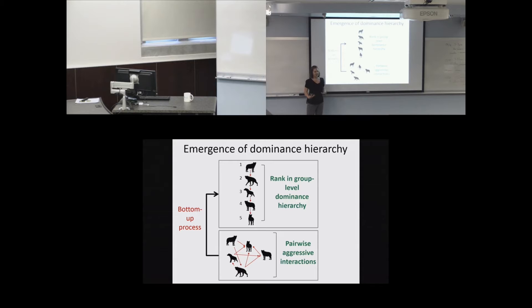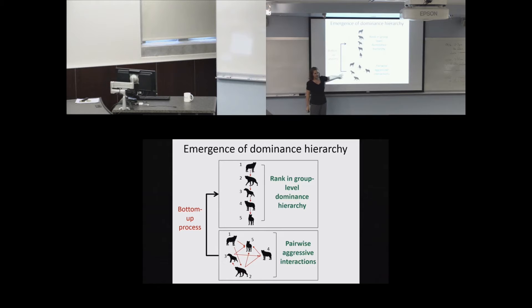As a researcher I have shortcuts of mathematical tools or algorithms that can help me define rank, but we don't actually understand how individuals themselves perceive those ranks and can use these sometimes very messy pairwise interactions to come up with some sort of global measure of a rank order. If individuals can do this and infer rank from aggressive interactions, then rank becomes an attribute of individuals within their social group. That could allow for a top-down process where individuals change how they interact with others based on this inferred rank.